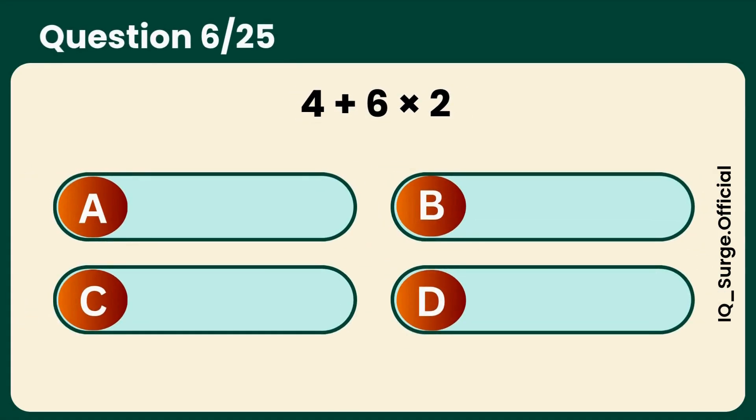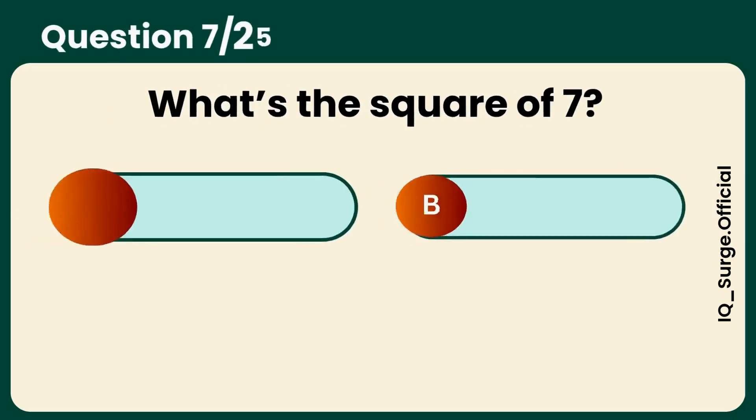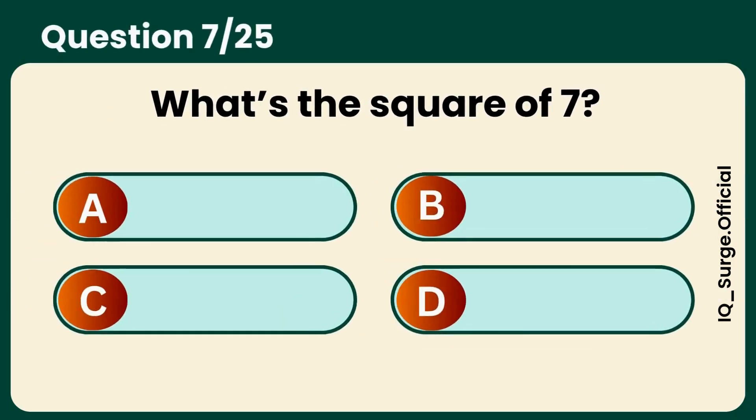Next one's a brain booster. C is the correct answer. Quick! What's the square of 7? Lucky number 7 strikes again.